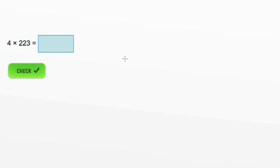We want to know what 4 times 223 is. So we're going to start by multiplying our numbers vertically.